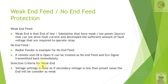The detection criteria for weak-end feed: voltage setting is configured so that if the secondary voltage is less than a preset value, the end will be considered weak. For example, at station A a large power generating station of hundreds of megawatts is connected, while at station B a small generator of only 10 kVA is connected, making the station B source very small.